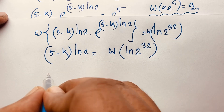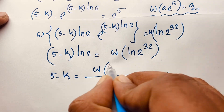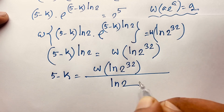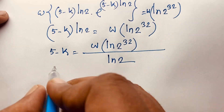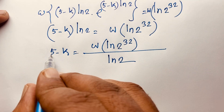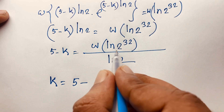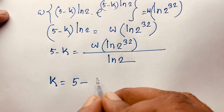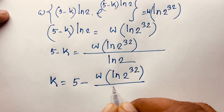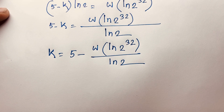Now 5 minus k equals W(ln(2^32)) over ln 2. Moving this value to solve for k: k equals 5 minus W(ln(2^32)) over ln 2, or equivalently, k equals 5 minus W(32 ln 2) over ln 2. This is our final answer to this entrance exam question.